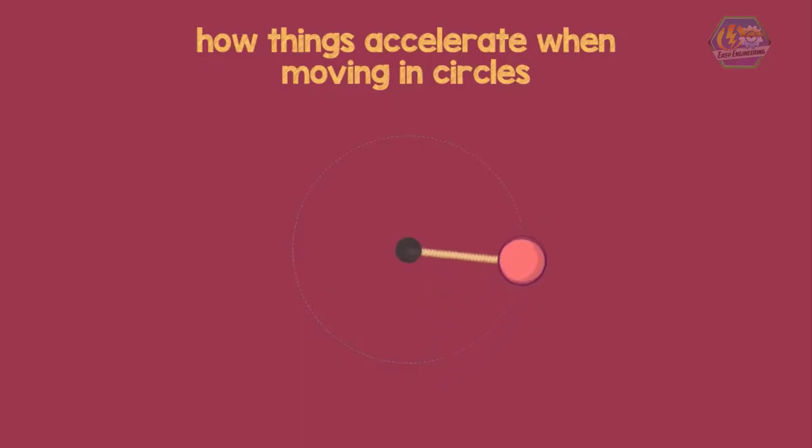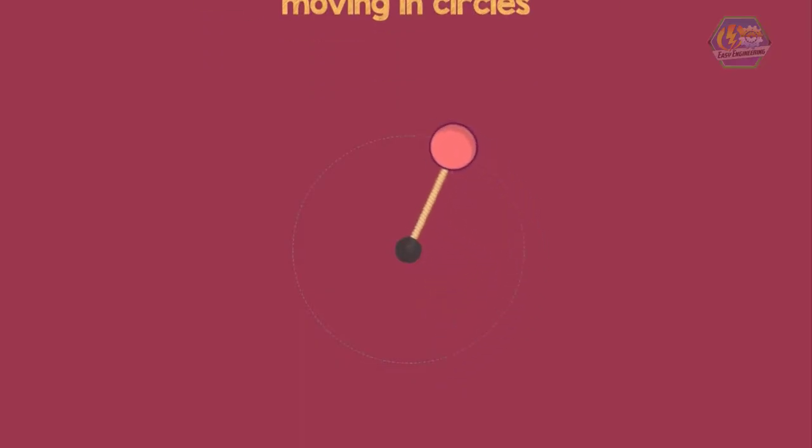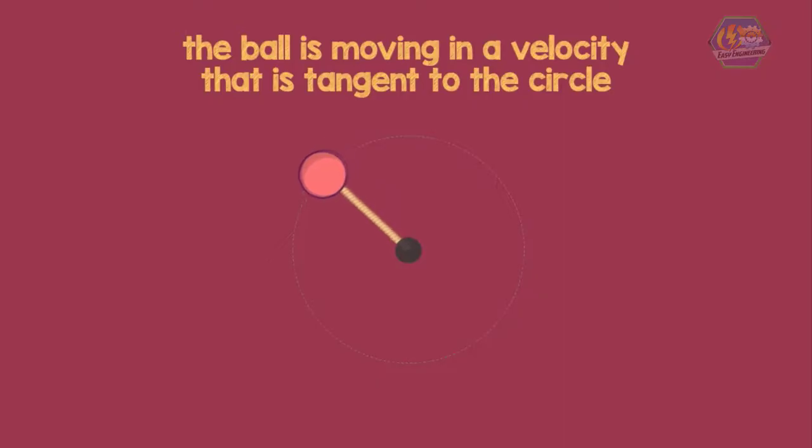But in any particular time, the actual ball is moving in a velocity that is a tangent to that circle. Suppose this arrow represents the velocity of the ball. You can see that the velocity at this point is always tangent to that circle. Now if the ball continues to turn, then you can see that the velocity changes as a result.